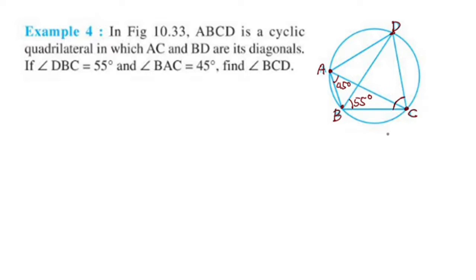In a cyclic quadrilateral, the sum of opposite angles is 180 degrees. Here, angle BCD and angle BAD are opposite angles. Now, angle BAD equals angle BAC plus angle DAC.